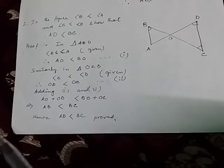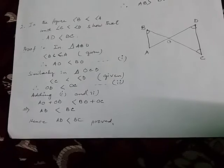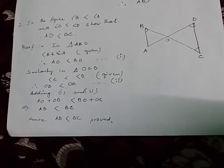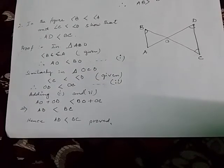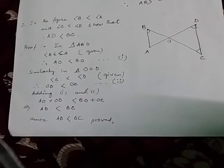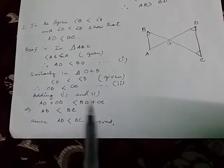Similarly, in triangle OCD, angle C is less than D, it is given. Therefore OD is less than OC, equation number 2.